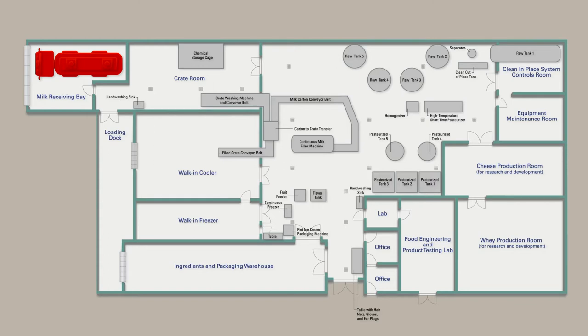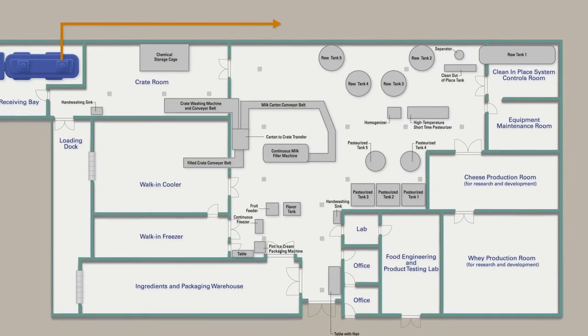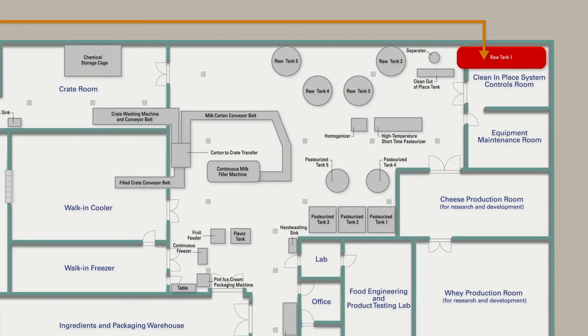If the milk is free from antibiotic residues, it is received through piping and flows directly into Raw Tank 1. The piping is fitted with a filter to remove any large debris that may have gotten into the raw milk at the farm. The milk then passes through the separator to standardize the milk fat content.